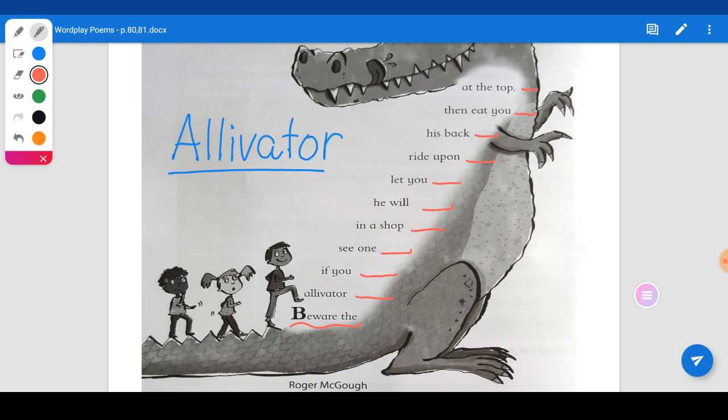Again, we are going to read it again. Let's start again. Beware the Ale-ve-tor. If you see one in a shop, he will let you ride upon his back. Then, eat you at the top. Done reading?